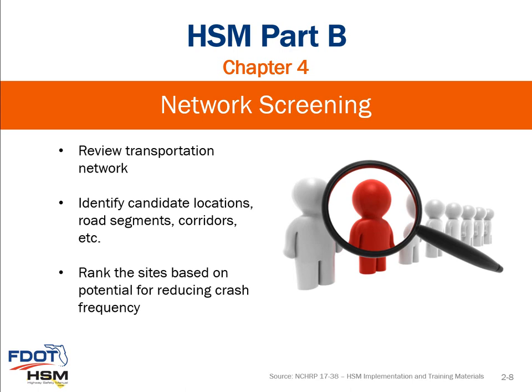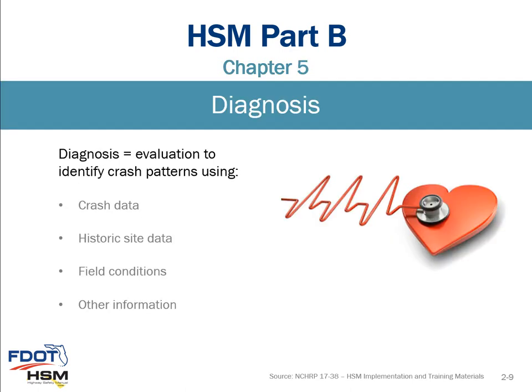The first step is network screening, which is Chapter 4. It involves reviewing the transportation network, identifying problem locations — roadway segments, corridors — basically identifying candidate locations, then going through a ranking process based upon the potential for reducing crash frequency. Once those are identified, you go through a diagnosis, which is a systematic process to evaluate and identify crash patterns. It considers crash data, historic site data, field conditions, and other information important to the site.